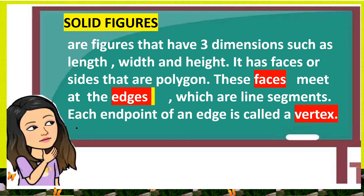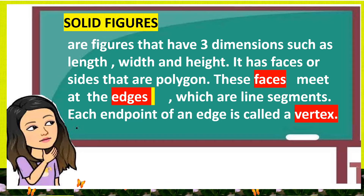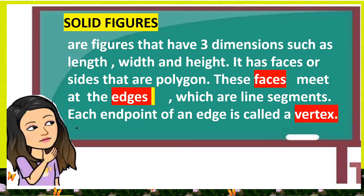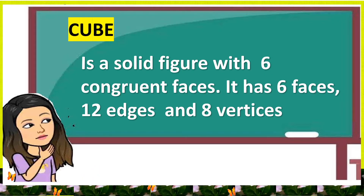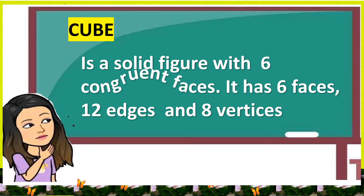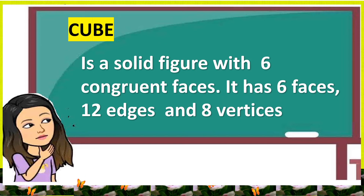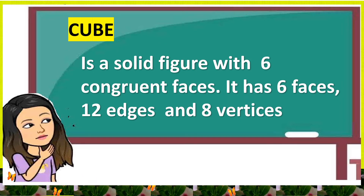Solid figures are figures that have three dimensions such as length, width, and height. They have faces and sides that are polygons. These faces meet at edges, which are line segments. Each endpoint of an edge is called a vertex. Cube is a solid figure with six congruent faces. It has six faces, twelve edges, and eight vertices.